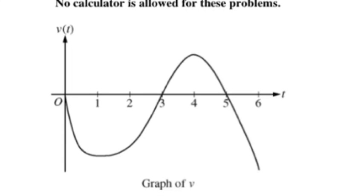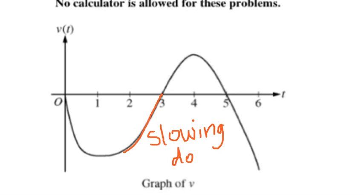Part C tests your understanding of the velocity graph. From two to three seconds, the velocity is approaching zero, which means the particle is slowing down. You earn the point by identifying that the particle's velocity is getting closer to zero, meaning the speed of the particle is decreasing.